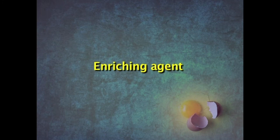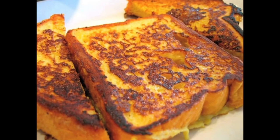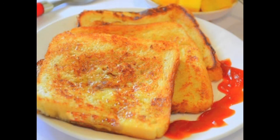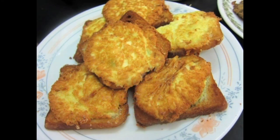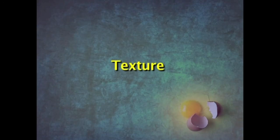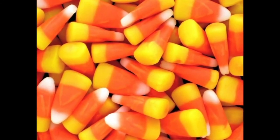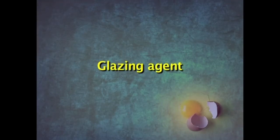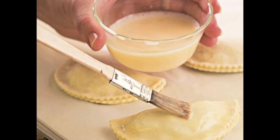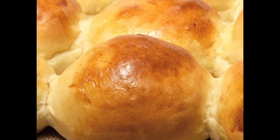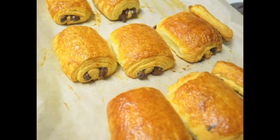Egg is also used as an enriching agent. Because egg is a very good source of protein, wherever it is used it enhances the nutritive quality of the product, for example in Bombay toast, where bread is dipped in a mixture of egg and milk containing sugar and then fried. Egg also helps to improve the texture of candies like marshmallows, where the egg white is beaten and used along with cream and butter to give a unique texture. Egg is also used as a glazing agent - while preparing buns, puffs and other biscuits, egg is beaten and a thin layer is applied with a brush on the product before baking, giving a very good golden brown color to the product after baking.